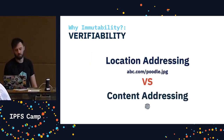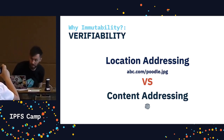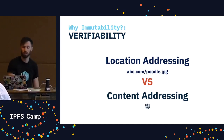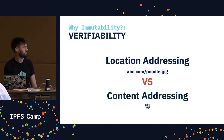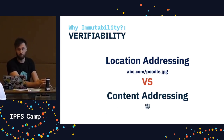What we have on the web today is location addressing — it tells us where the data is stored, but not much else. Content addressing, on the other hand, is where we use a hash to access the content, and it allows us to verify that the content we receive is the content we asked for.